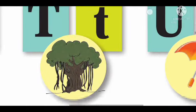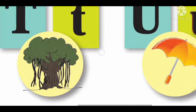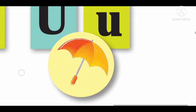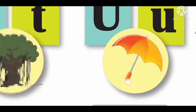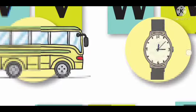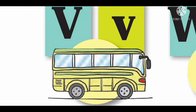T for tree. U for umbrella. And V for van.